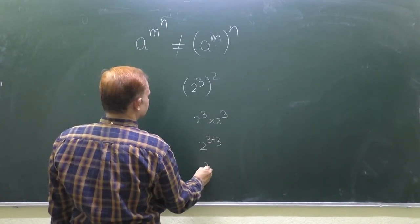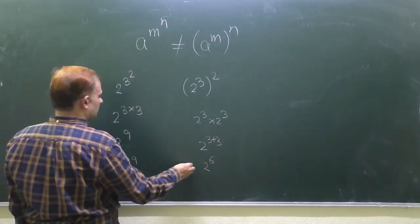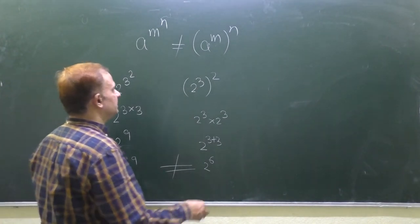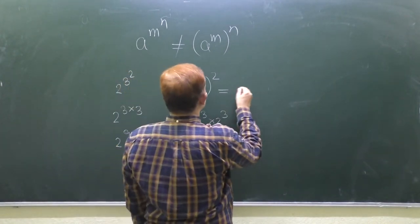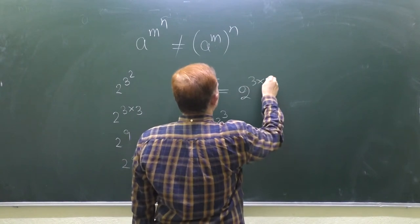2 to the power 6, and this is 2 to the power 9. So both are, you can see, not equal. This is equal to what? This is equal to 2 to the power 3 times 2, according to law of indices.